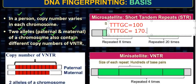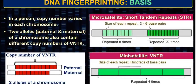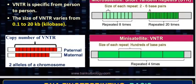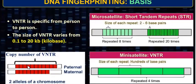So I have two chromosomes. In one arm, there will be more repetitions representing my father's DNA. In the other arm, there will be fewer repetitions representing my mother's DNA. VNTR is also specific from person to person because it represents the number of repetitions. The size of VNTR varies from 0.1 to 20 kilobases — that means from 100 bases to 20,000 bases.